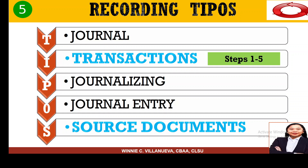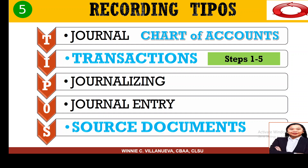It's the fifth step because we need to refer to the chart of accounts in order for us to do the three-in-one activity. After the fifth step, we can do the journalizing, write it in the journal, and we have the journal entry. That would be your synergy effect — your three J's.